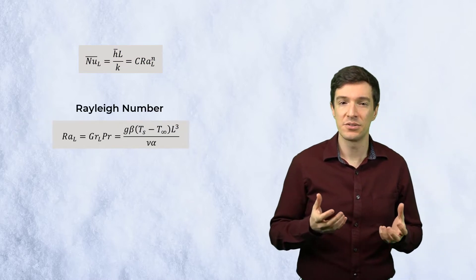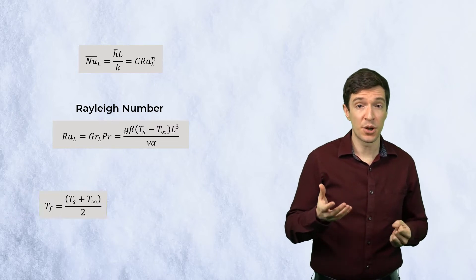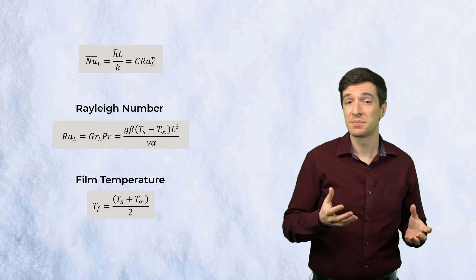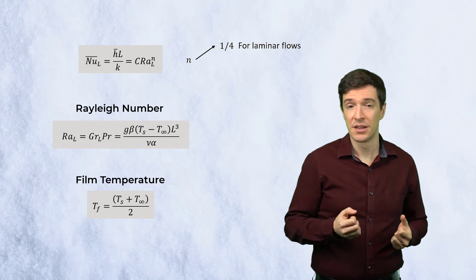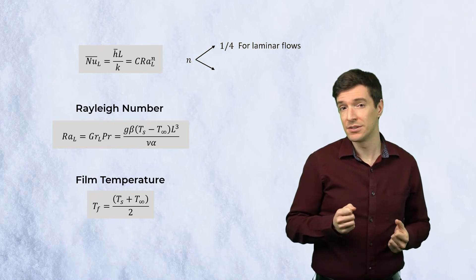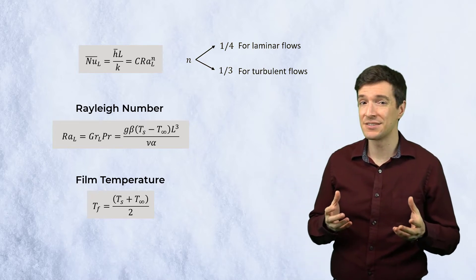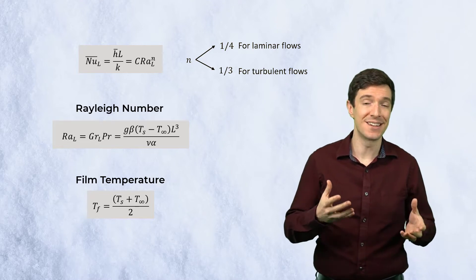Most of the correlations can be generalized in this form, where the Rayleigh number is calculated using an appropriate characteristic length and estimating the fluid properties at the film temperature. The exponent N is typically one-fourth for laminar flows and one-third for turbulent flows. This means that in turbulent flows the heat transfer coefficient is independent of the body characteristic length.